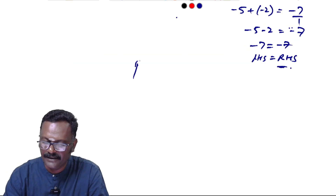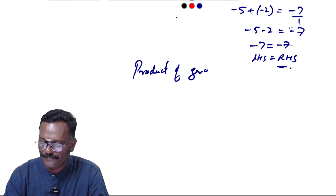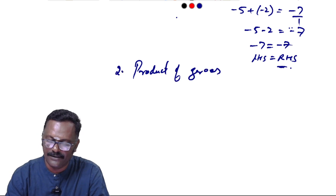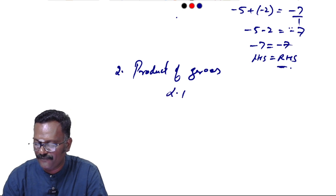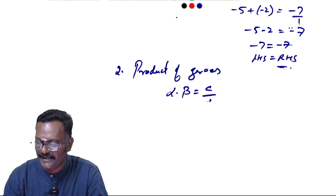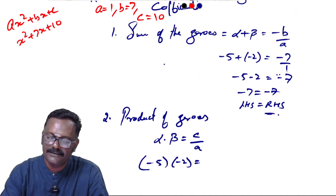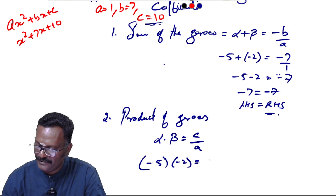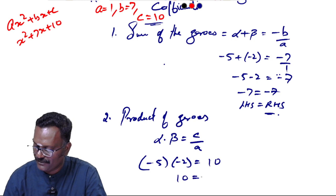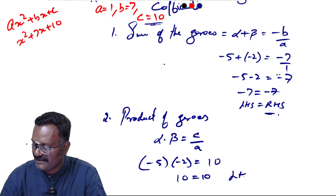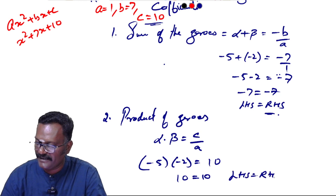Next, the product of zeros: alpha into beta equals c by a. So (-5) × (-2) = c/a. Minus into minus gives plus: 10 equals 10/1 equals 10. Left hand side equals right hand side. Hence verified.